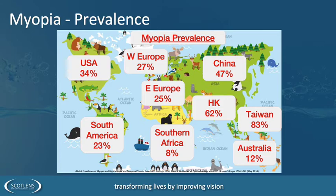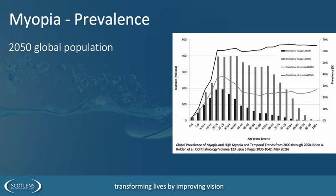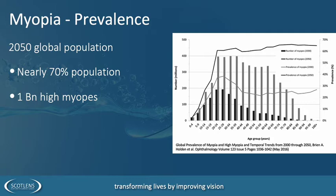Looking around the globe, there are different levels of myopia. Highest levels are particularly in east and southeast Asia. In Taiwan, there's quoted to be 83% incidence of myopia — in some subgroups, such as teenage girls, there's a hundred percent incidence. It varies around the world; we have around 25 to 27 percent in the UK. Worryingly, as myopia increases, we can expect by 2050 to have nearly 70% of the population being myopic, leading to over a billion high myopes — high myopia being over minus six.